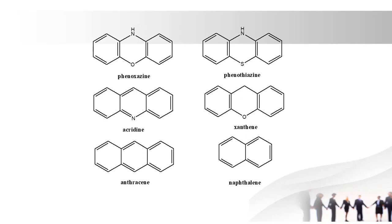Next one is phenothiazine. In phenothiazine, 'phen' stands for phenyl ring, 'thia' stands for sulfur, and 'az' stands for nitrogen. The drug chlorpromazine contains the phenothiazine ring.